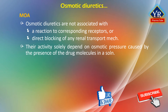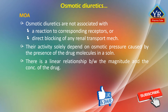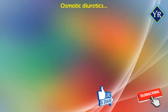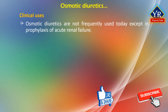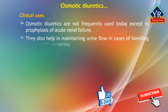Pharmacological activity of this group depends solely on the osmotic pressure caused by the presence of the drug molecules in a solution. Located in the intracellular fluid, these compounds force intramolecular water molecules into the extracellular space and prevent them from returning into the cell. There is a linear relationship between the magnitude of the diuretic effect and the concentration of the osmotic diuretic drugs. Osmotic diuretics are not frequently used in medicine today except in the prophylaxis of acute renal failure, in which these drugs inhibit water reabsorption and maintain urine flow. They may also be helpful in maintaining urine flow in cases where urinary output is diminished because of severe bleeding or traumatic surgical experiences.